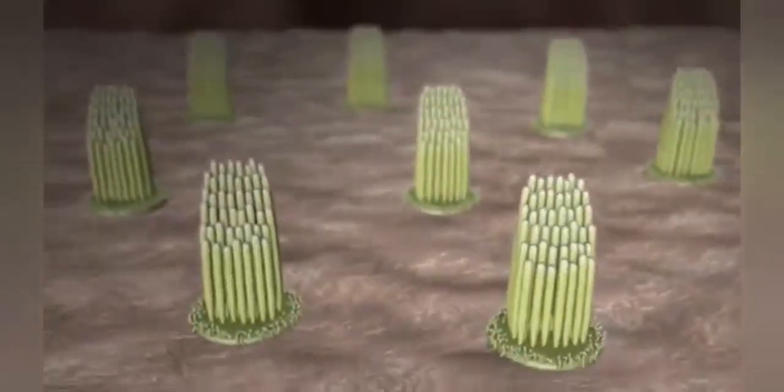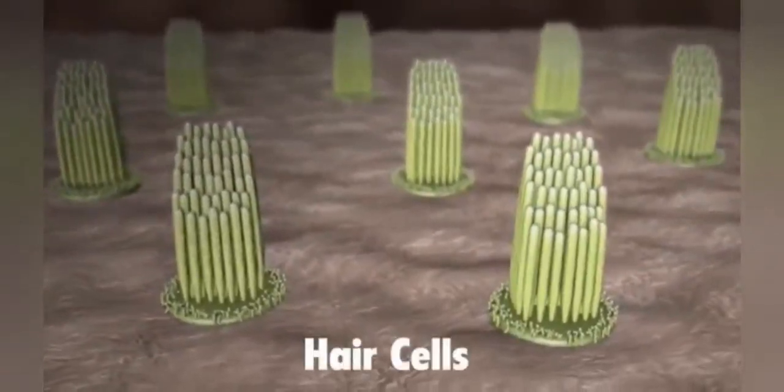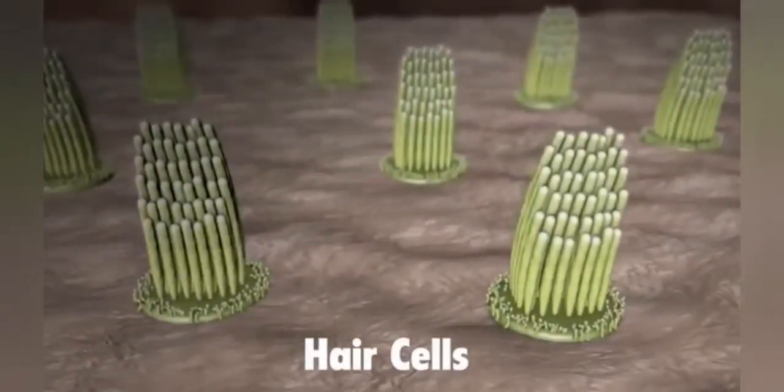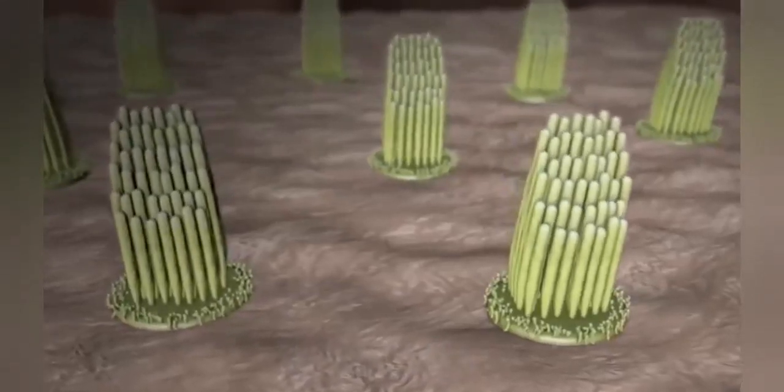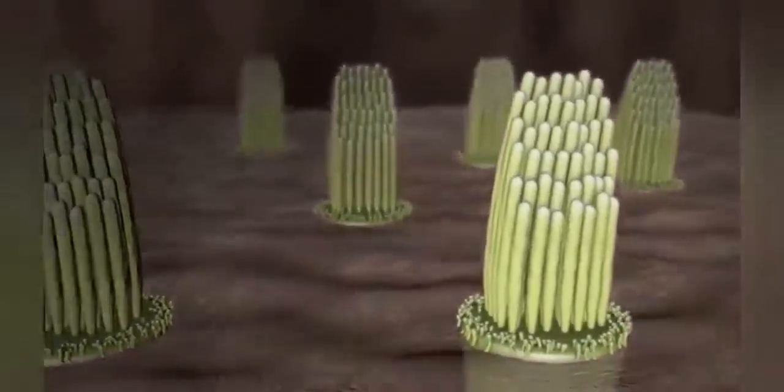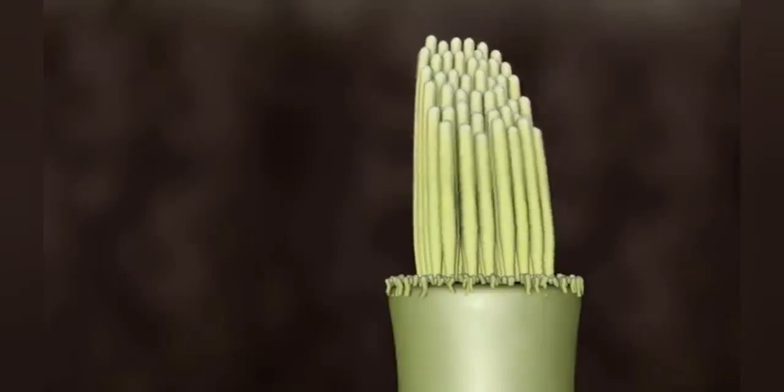Hair-like structures called stereocilia sit on top of hair cells and are grouped together as hair cell bundles inside the cochlea. The hair cells inside the cochlea ride these waves and the hair bundles are moved. The hair bundle on top of the hair cell turns these movements into electrical signals.